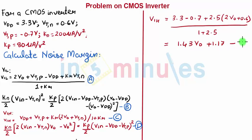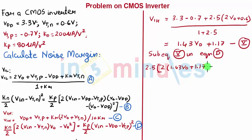Let's call this equation number 5. Now we need to substitute equation number 5 in equation D, which will give me the corresponding expression: 2.5 times 2 into 1.43 Vout plus 1.17 minus 0.6 Vout minus Vout square equal to 1.43 Vout minus 1.43 the whole square.